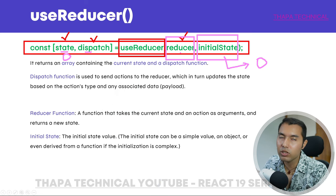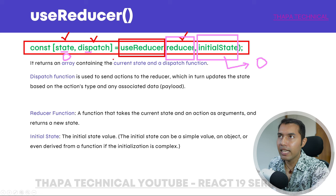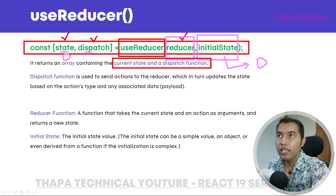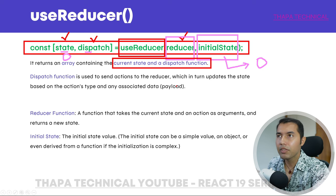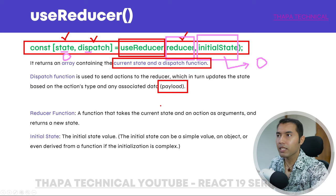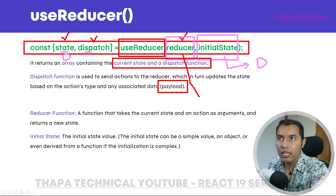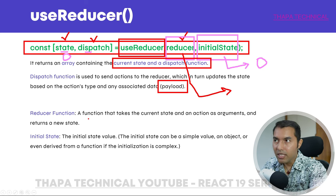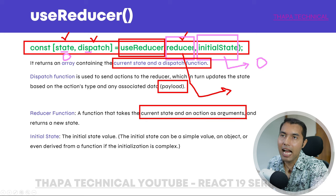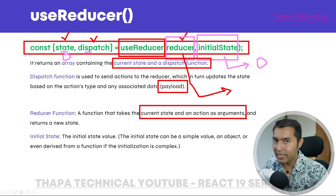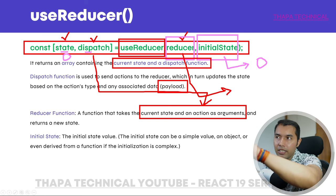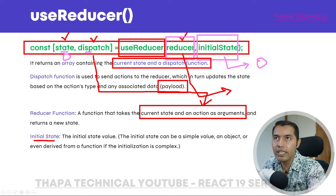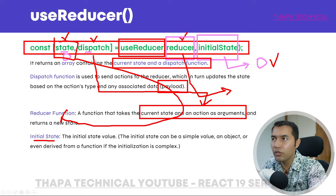It returns an array containing the current state and a dispatch function. This dispatch function's job is to send an action to the reducer function. There is also something called payload which you will learn about. The reducer function takes two arguments: the current state and an action as arguments. The dispatch function is used to pass the action to the reducer function, and the initial state is the value passed as the second argument.